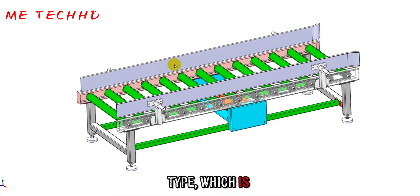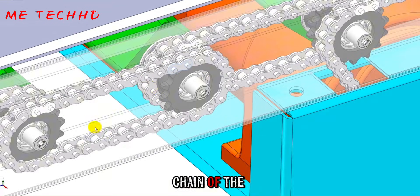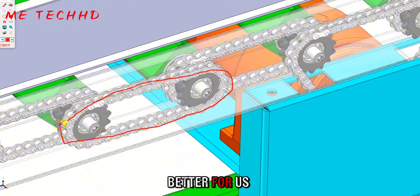The fourth type, which is also the most used, is a chain transmission. The double row chain is used. It is better for us to use more of these four kinds.